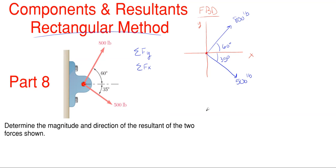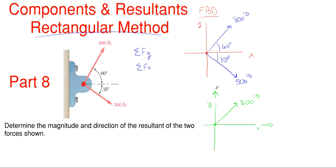First, I'm going to look at each force individually. With my first one I have the 800 pounds which is up and to the right. Since this 800 is going up and to the right, the y component and the x component have to be going up and to the right as well — the components of the force have to match the general direction. I'll call this one fy and this one fx, with the angle of 60 degrees.